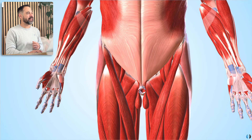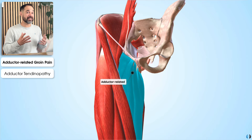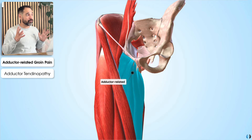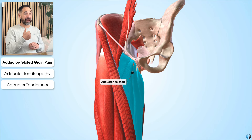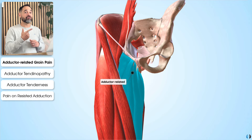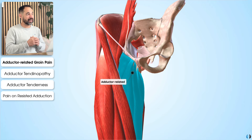Starting with adductor-related groin pain, we might be thinking about an adductor tendinopathy principally. The key signs that the experts linked to this were adductor tenderness on palpation in the adductor region at the pubic rami, with pain on resisted adductor testing, which will stimulate those adductor muscles and generate adductor-related groin pain.